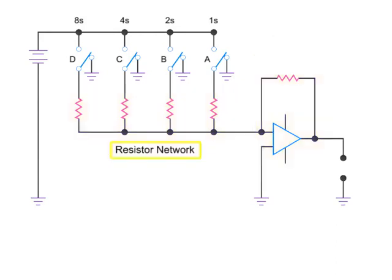The resistor network is made up of 4 resistors with values of 18.7, 37.5, 75, and 150 kilohms.